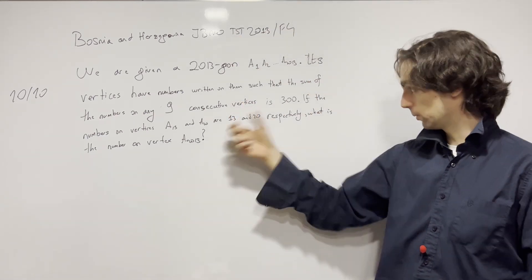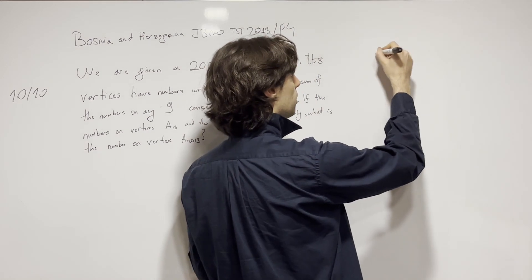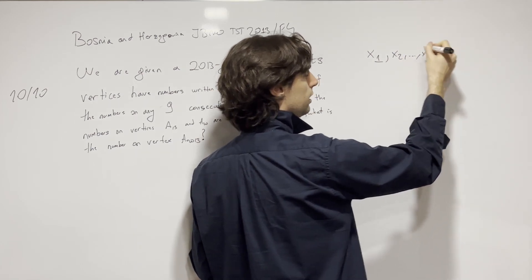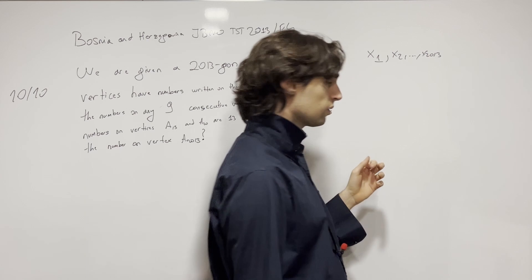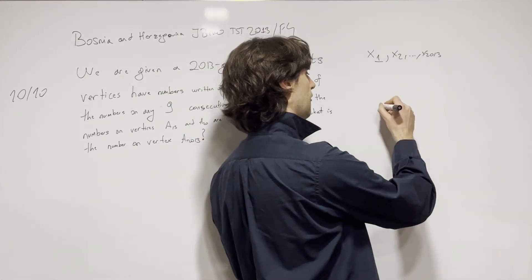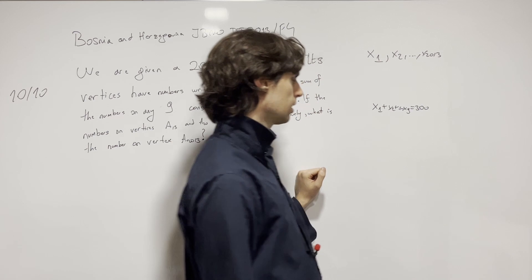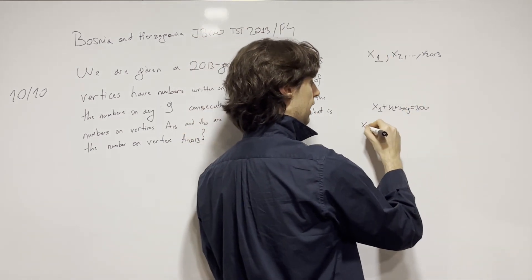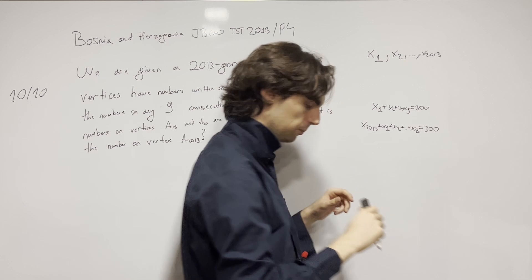The answer is: we care about the numbers at these vertices. So let's call these numbers — let x_1 be the number written on vertex a_1, x_2, all the way till x_2013 be the number written on vertex a_2013 — and we're looking for x_2013. The sum of any nine consecutive vertices is 300, so we have x_1 + x_2 + ... + x_9 = 300. And because this is a polygon, it's circular, so we also have x_2013 + x_1 + x_2 + ... + x_8 = 300.